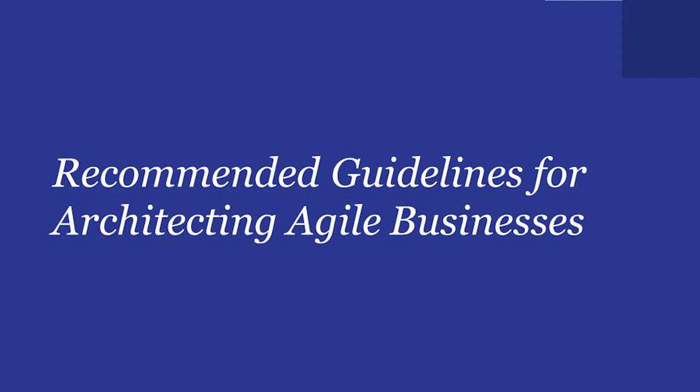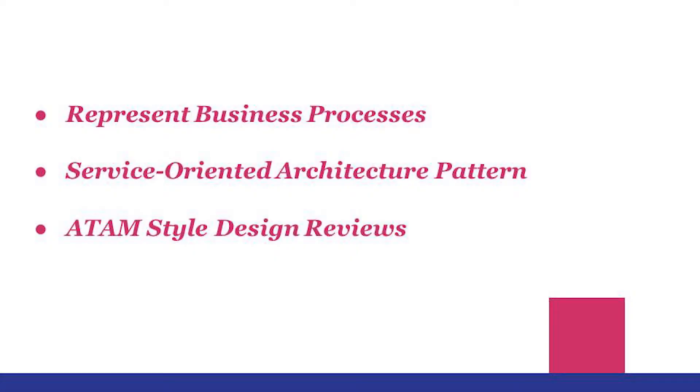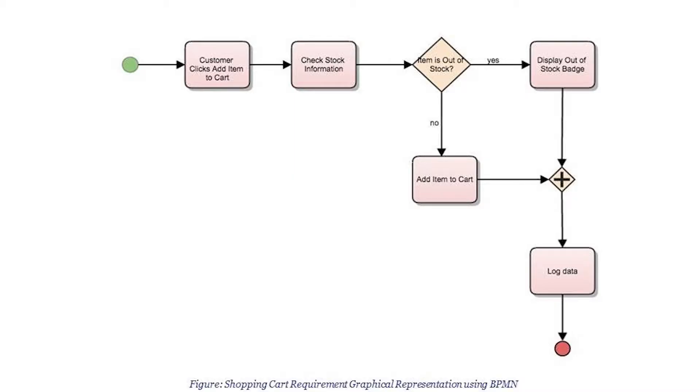At Conga, we came up with a solution for architecting our business. We represent the business processes using the service-oriented architecture pattern, and then we use ATAM style design reviews in our architecture evaluations. We represent business requirements using either process flows or the Business Process Model and Notation. Here we can see a requirement for an add-to-cart: the customer clicks add to cart, we check stock information, check if item is out of stock — we display an out-of-stock badge. If it's not out of stock, we add the item to cart, and then we log the data.